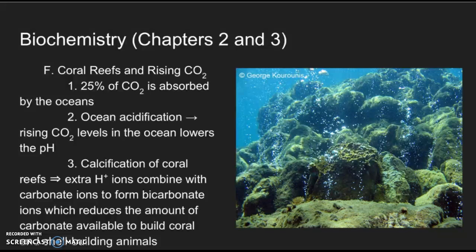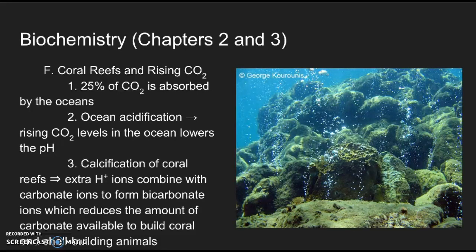Calcification of the coral reefs occurs, so you'll always see those famous pictures of the bleached coral reefs. This is what happens when extra H plus ions, the hydrogen ions, combine with carbonate ions to form bicarbonate. This reduces the amount of carbonate available to build coral reefs. You'll have microorganisms that would usually use this carbonate ion to build the coral reef structures. But when these carbonate ions become bicarbonate because of the extra H plus, these microorganisms can no longer do this. This becomes a serious problem in terms of marine biology.